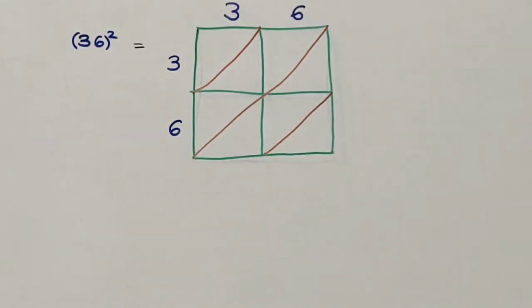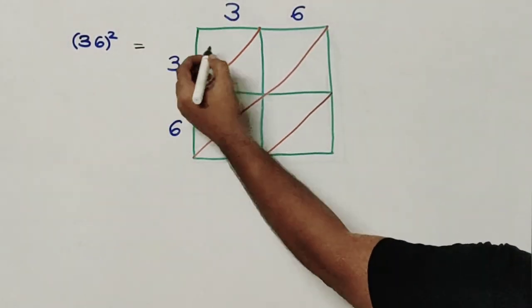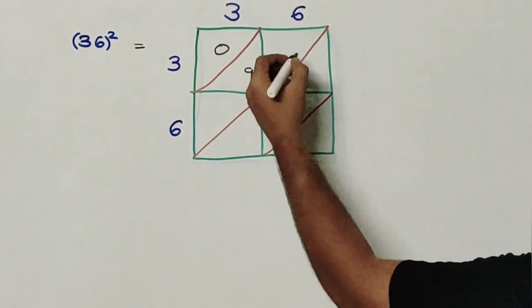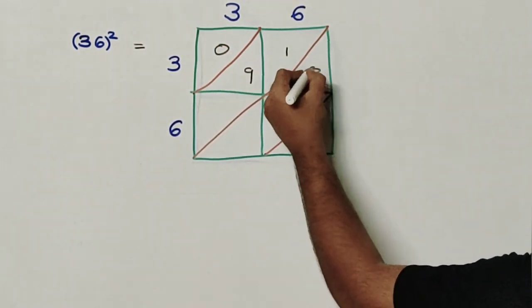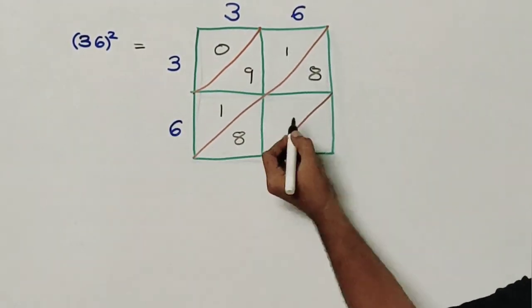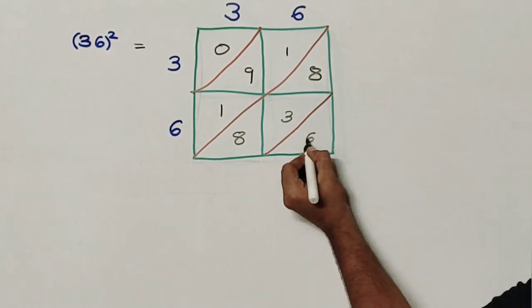So let us write the answers in the box. First, 3 into 3 gives me 9. 6 into 3 gives me 18. 3 into 6 gives me 18. And 6 into 6 gives me 36.